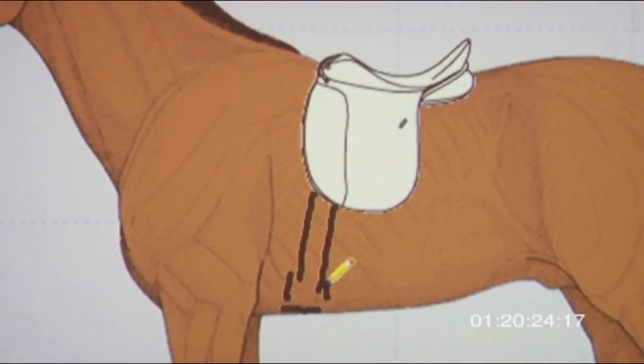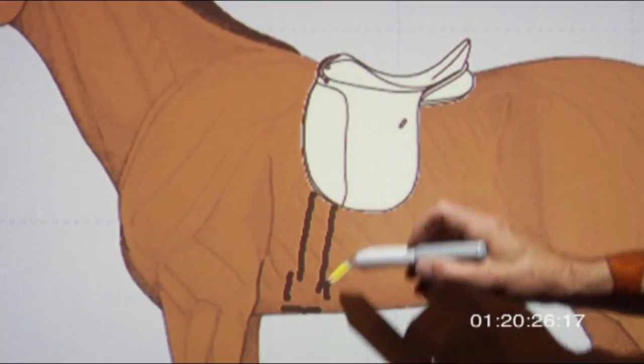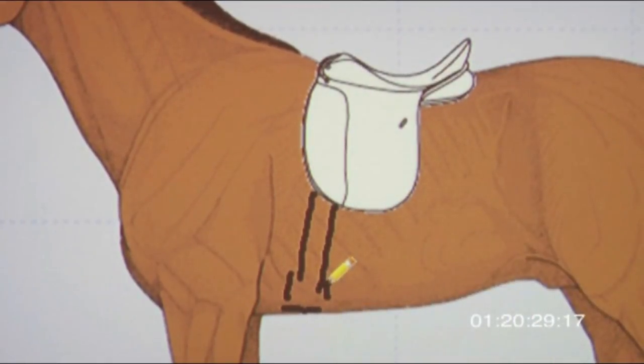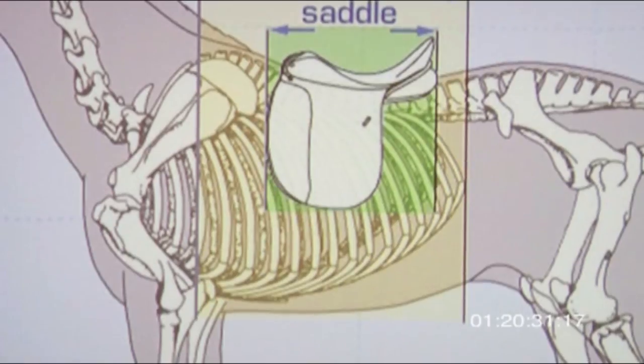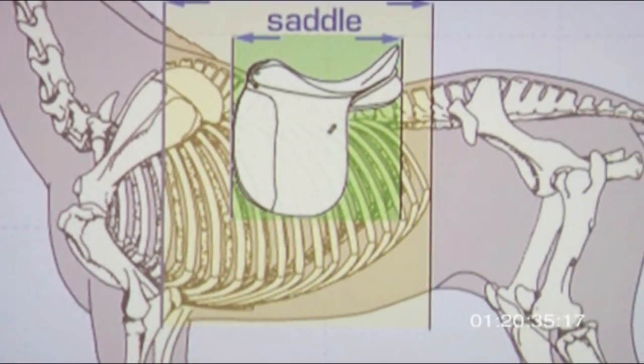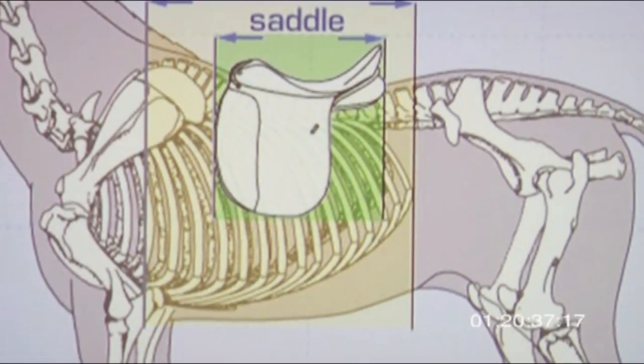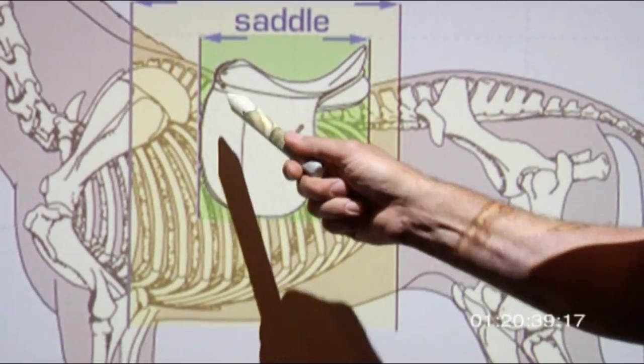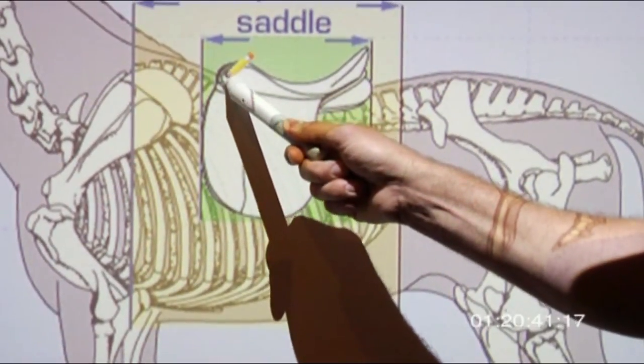So they align up with the girth area and hang perpendicular to the ground. Here we can see clearly the saddle is too far back. The gullet plate is where these nails are on your saddle.